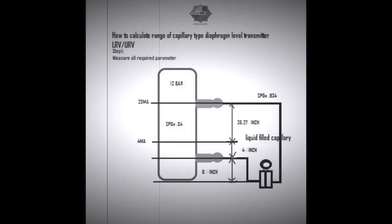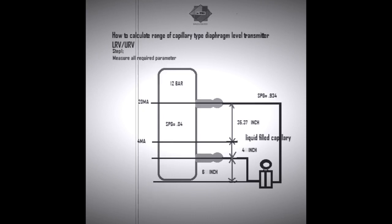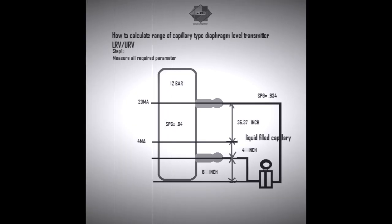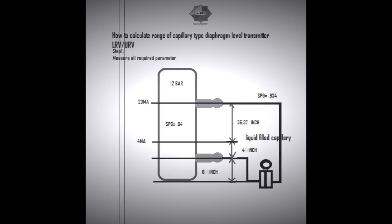Good morning engineers. Today we are going to study how to calculate a range of capillary type diaphragm level transmitter in the field of level measurement. For that, first we need to measure all the parameters: what is the zero percentage level, what is the 100 percentage level, what is the process gas specific gravity, and what is the capillary liquid fill specific gravity. Then it is easy to find LRV as well as URV.